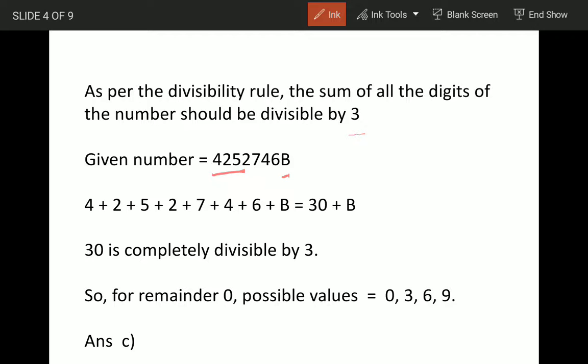When we add the digits 4+2+5+2+7+4+6, we get sum as 30 + B. 30 is divisible by 3, so we should have value of B in such a manner that the outcome 30 + B is divisible by 3.